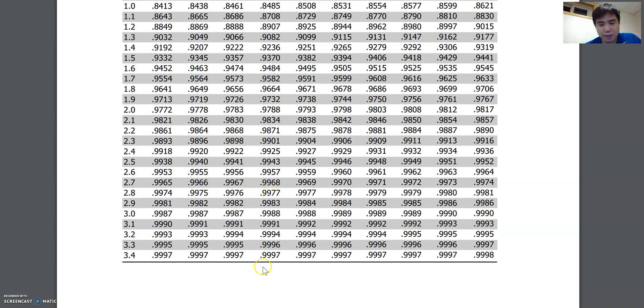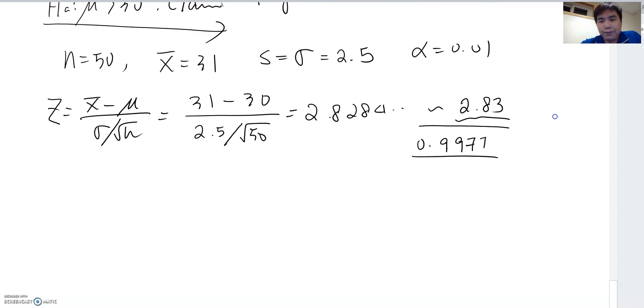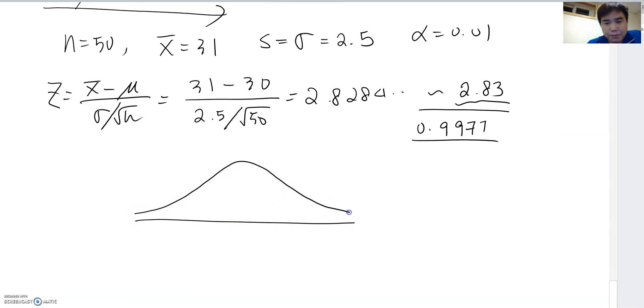Let's look at the z-table for 2.83, which is 0.9977. So we got this value of 0.9977. Now we have to look carefully. When we draw the normal distribution here and we got the z-score of 2.83 here, we need to know what this value represents. Does it represent this area or this area? Based on the z-table, this value means the cumulative area from the left side, so this indicates all this area.